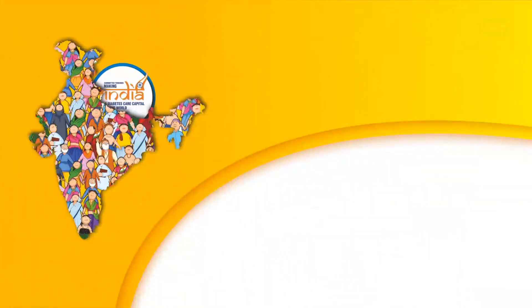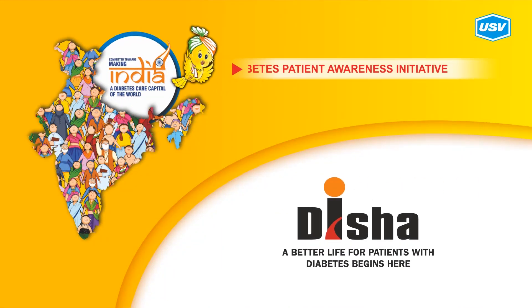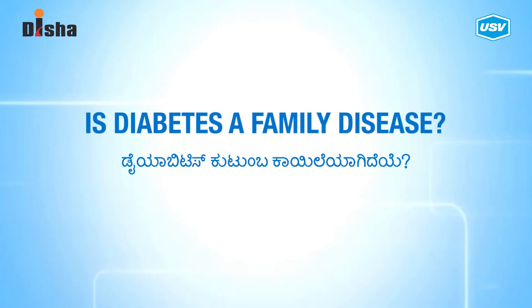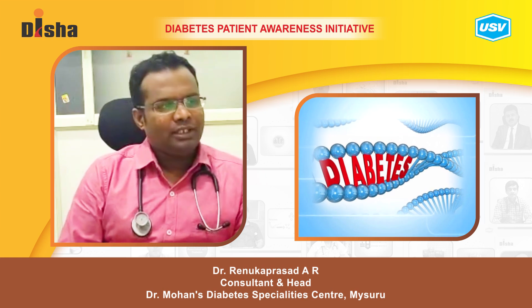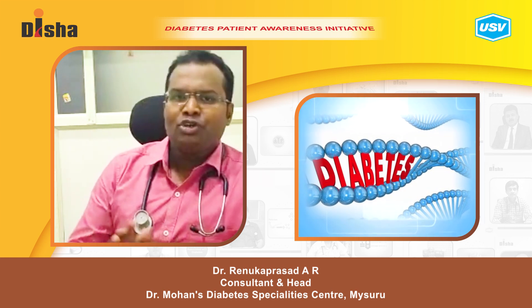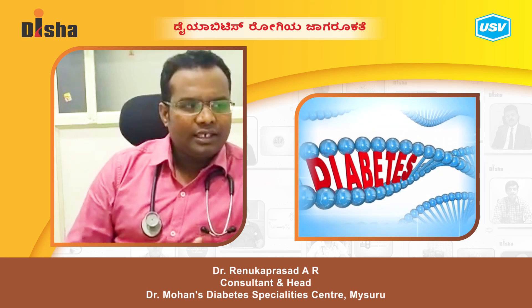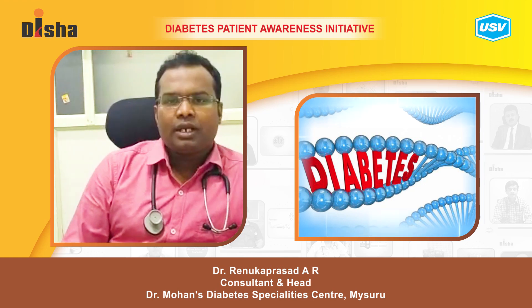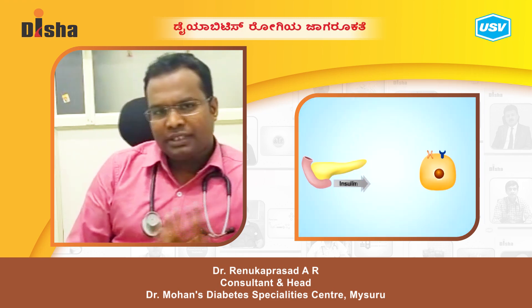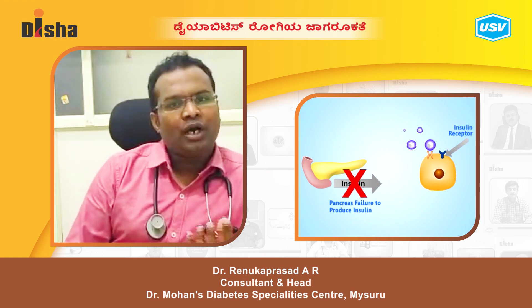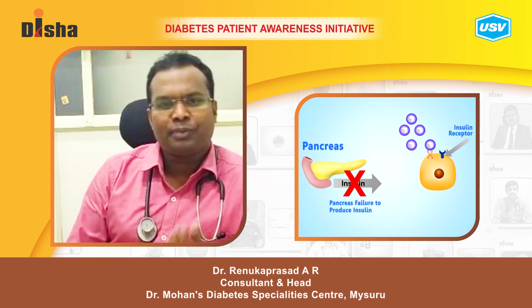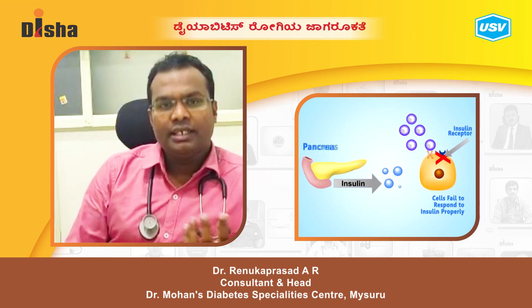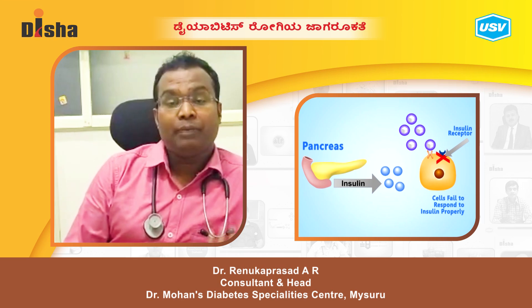What is the problem with the family? We will discuss the problem with the family. The problem with the family is not simple — it is related to insulin in the population of the family. The problem with the body is which the whole body will be affected.